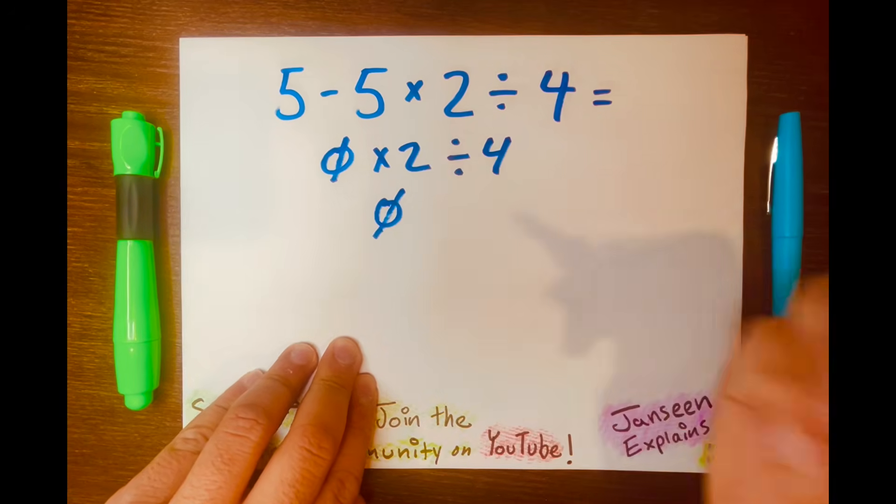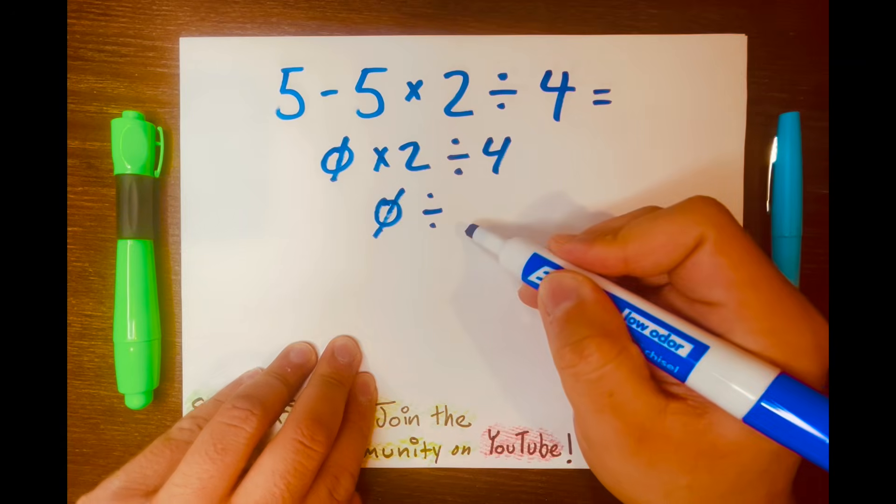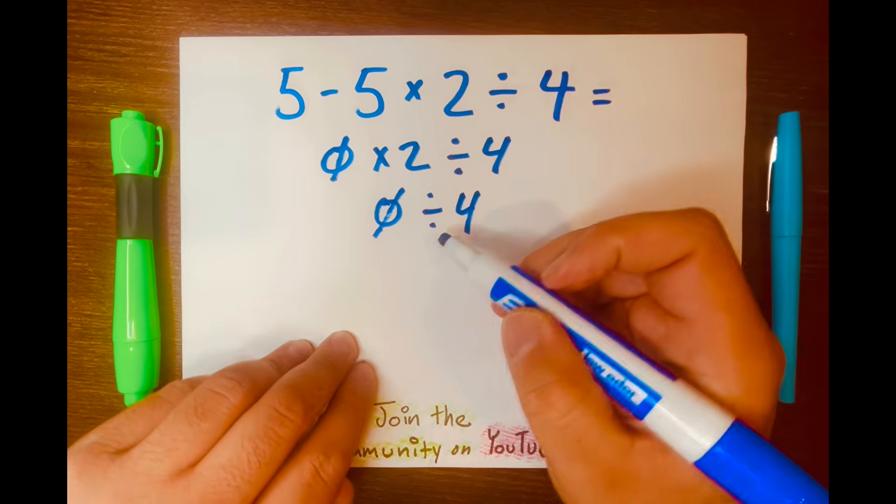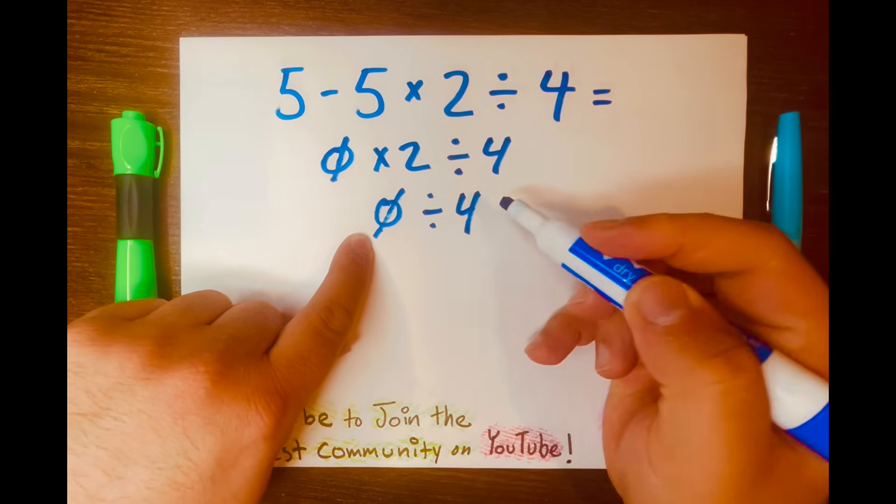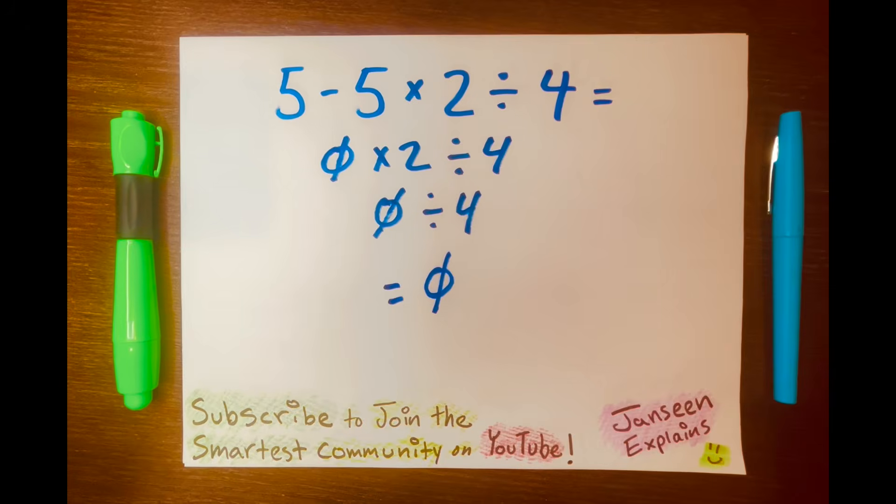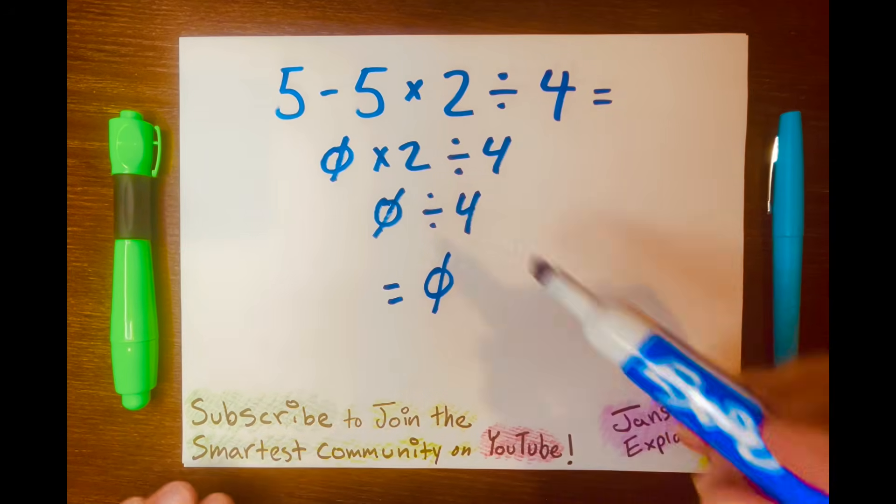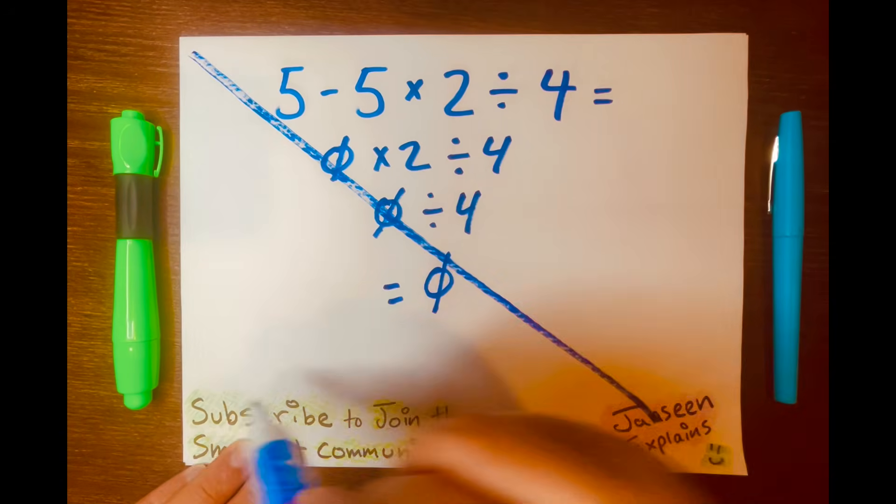Then they'll bring down the division symbol and the 4 down, and then they'll divide 0 divided by 4, which equals 0. And to them, this is the answer, and this is so wrong.